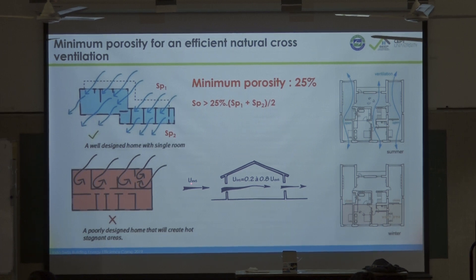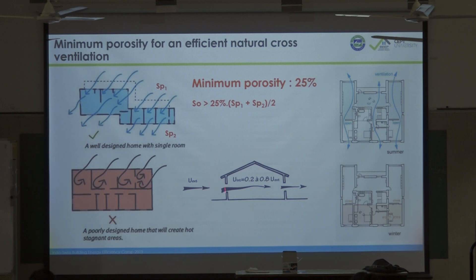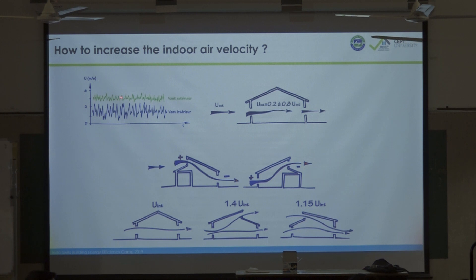If you have for instance an air velocity of 3 meters per second outside, keep in mind that inside you'll get only 20 to 80 percent of that, depending on porosity, size of openings, etc. So your wind potential with coefficients k1 and k2 will give you an idea of the air velocity you can get inside.